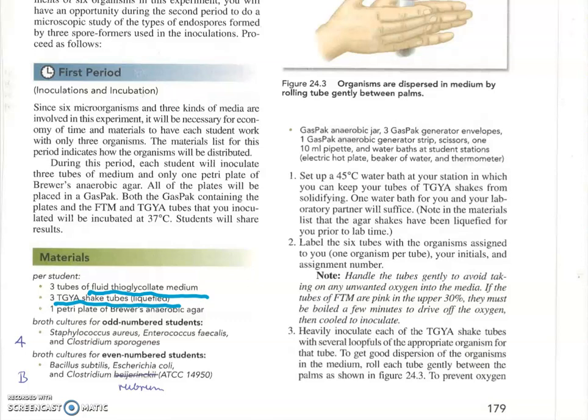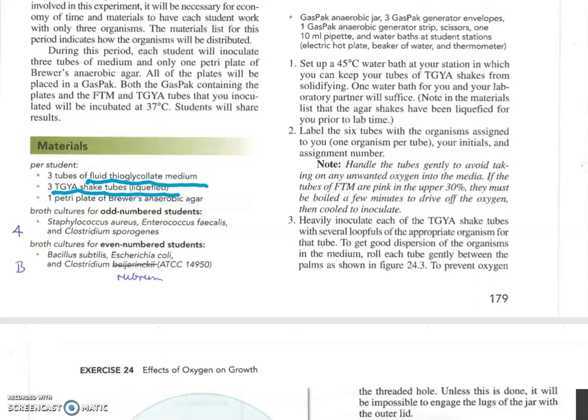We have six different types of bacteria for this lab and you would have been assigned to one group of three or the other. Group A of three bacteria is Staphylococcus aureus, Enterococcus faecalis, and Clostridium sporogenes. Group B, those three bacteria would have contained Bacillus, Staphylococcus, E.coli, and Clostridium rubrum. That's the one that we have in the lab. And you should have done this in groups so that you can see the results from group A and group B on your table groups.